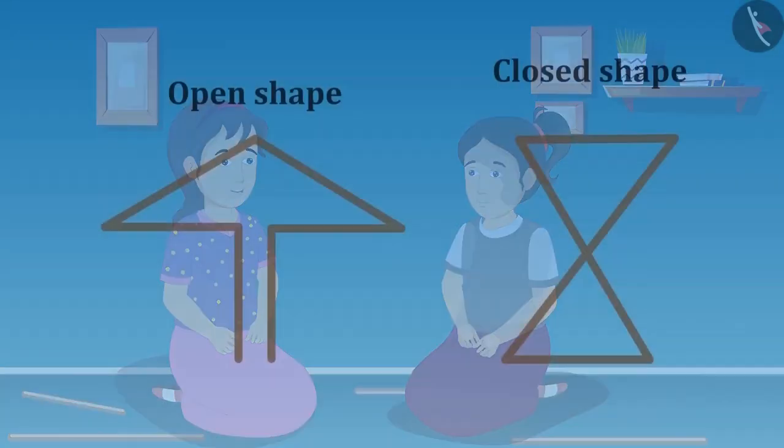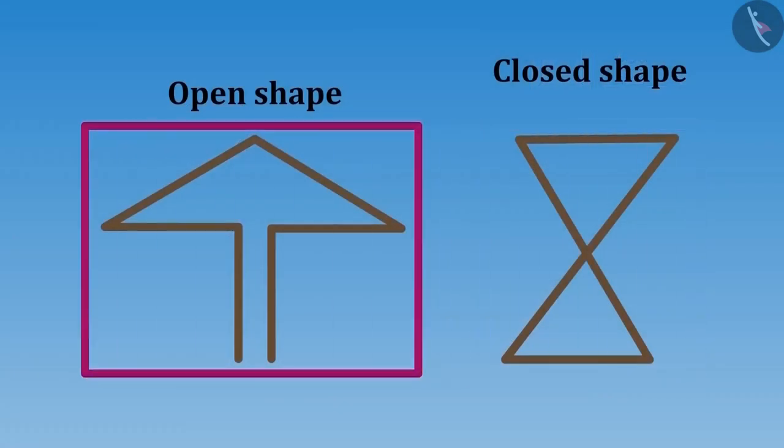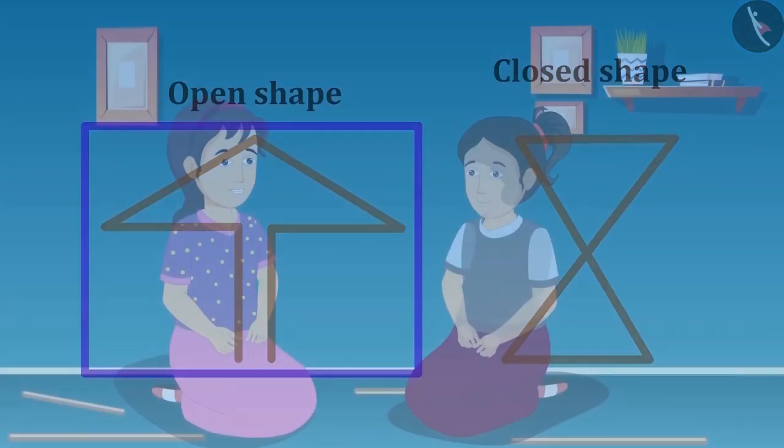Riva, do you know that this shape made out of 6 sticks is a closed shape? And this is an open shape?